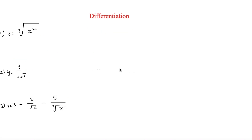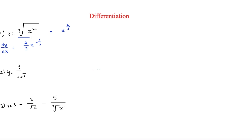Now here are a few questions. The first one is y equals the cube root of x squared. We need to rewrite this to make it easier to differentiate. We can write it as x to the 2 thirds, because it's being squared but also cube-rooted. Then to find dy/dx, we follow the same pattern: 2 thirds times x, and 2 thirds minus 1 equals minus 1 third. So dy/dx equals 2 thirds x to the minus 1 third.